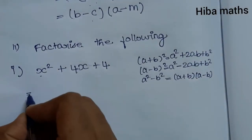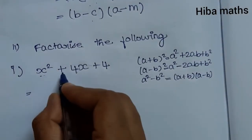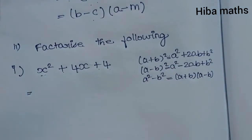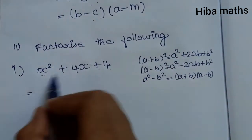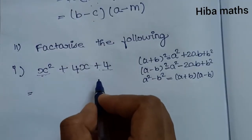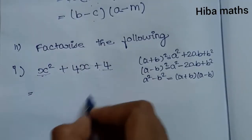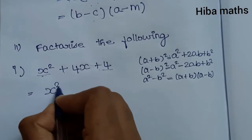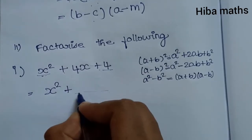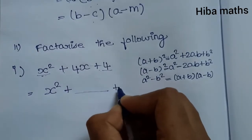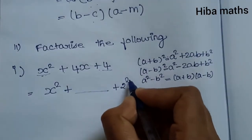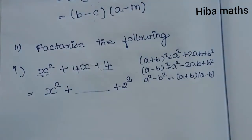Now, how do we factorize x² + 4x + 4? This matches the (a+b) whole square formula. The first term is a square (which is x²), and the last term is b square. Notice that 4 equals 2², and 4x equals 2·x·2, which matches the middle term 2ab.